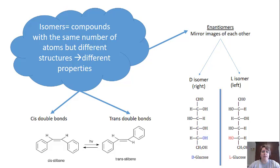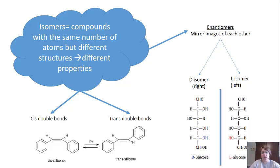Another chemical term we need to know is what an isomer is. Isomers are compounds with the same number and type of atoms, but they have a different structure. That different structure leads to different properties of that compound.